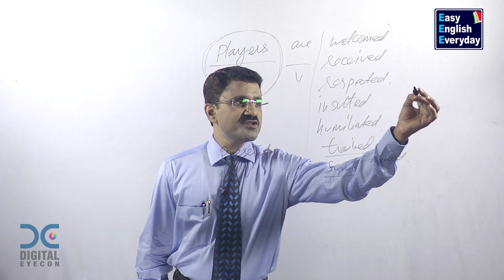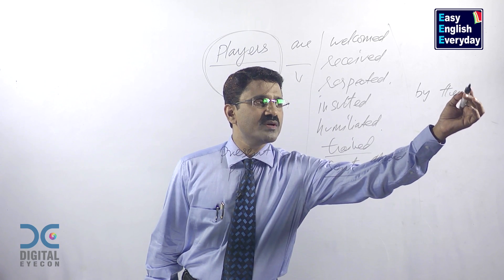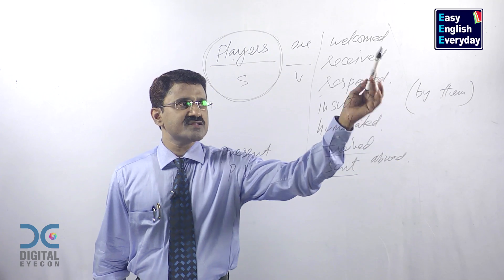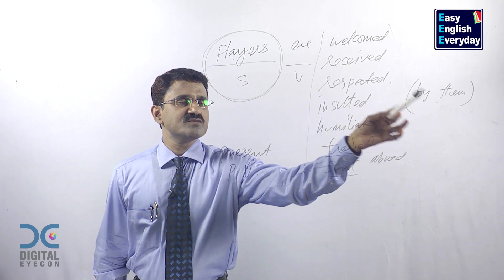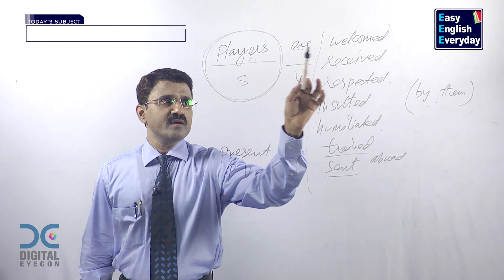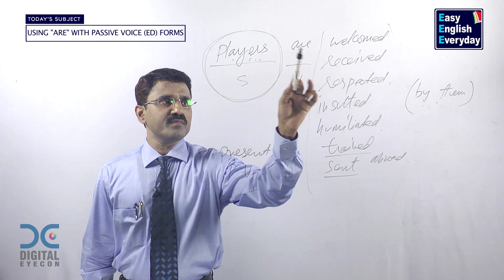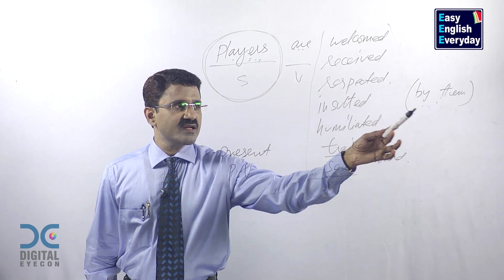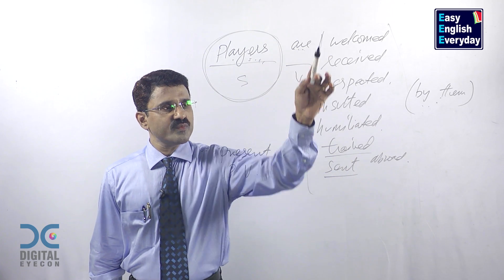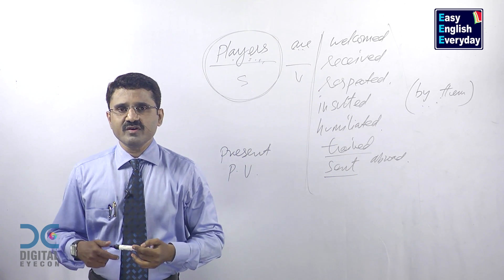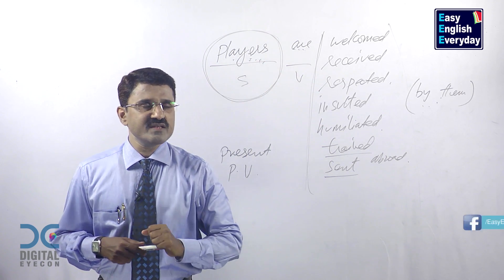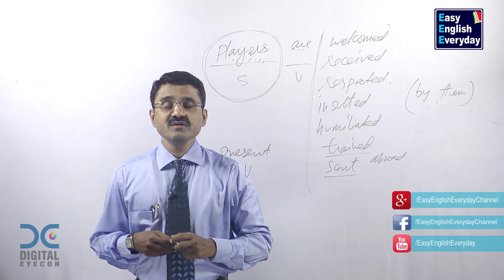If you want to mention the doer, you can mention the doer. Players are welcomed by them — 'them' means somebody else. Players are received by them. Players are respected by them. Players are insulted by them. Players are humiliated by them. Players are trained by them. Players are sent abroad by them. Keep collecting a large number of past participle forms for living subjects and keep making your own sentences. This is another technique, another way of framing sentences with 'are'.